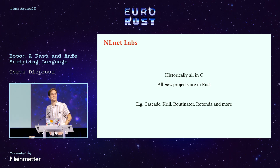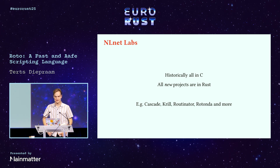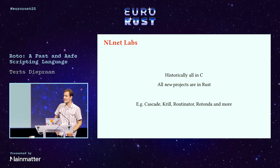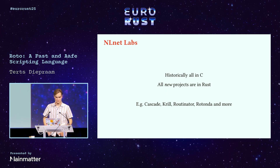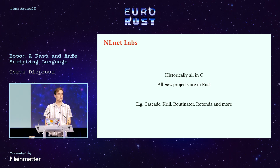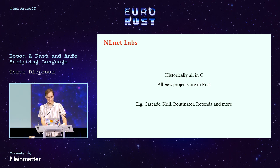Historically, all of these products have been written in C. However, a couple of years back we discovered Rust, and now all our new products are in Rust. This includes the DNSSEC signer called Cascade, and some other products called Krill, Routenator, and importantly for this presentation, also Rotunda.